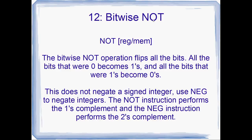Number 12: bitwise NOT. This is a really cool instruction — it flips all of the bits in your operand. So if you NOT RAX, it's going to flip all of the zeros to ones and all of the ones to zeros. Note that this doesn't actually negate a signed integer. If you want to negate a signed integer, you want to use NEG instead of NOT. NOT performs the ones complement, and NEG performs the twos complement. x86 CPUs generally represent signed numbers with twos complement.